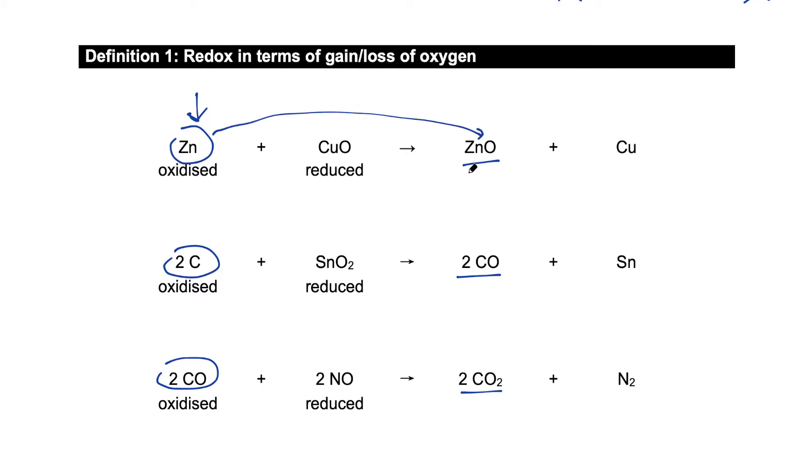So oxidation usually occurs when a substance gains oxygen. In the first equation, zinc is oxidized because it gains oxygen to form zinc oxide.